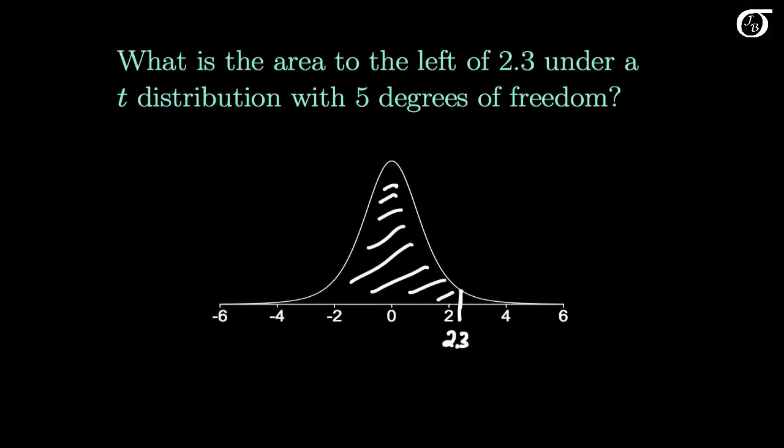And so the command PT in R tells us that this area is approximately 0.965. If we wanted the area to the right instead, this area out here, then that's simply going to be 1 minus 0.965.